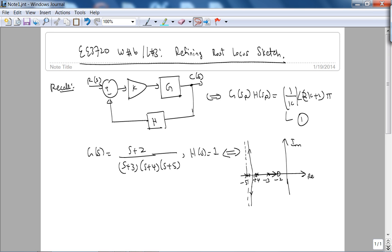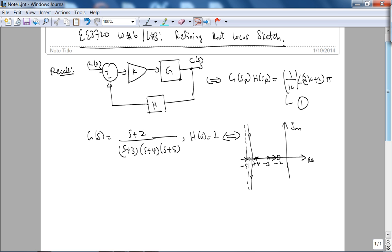We did determine the asymptotes two asymptotes, and we also applied ideas like symmetry about the real axis. The number of branches for the root locus is 3, but let's start out by finding what is called the breakaway point, the point at which the root locus breaks away from the real axis or breaks in to the real axis.